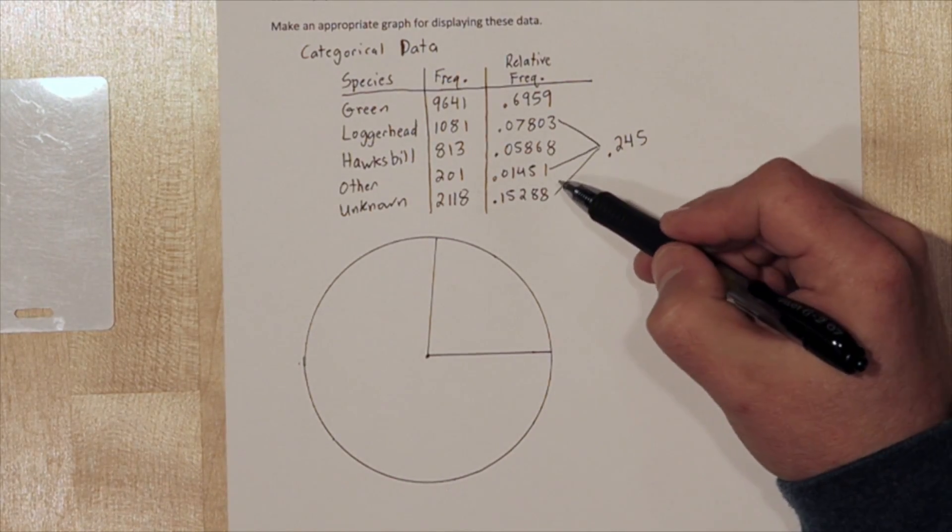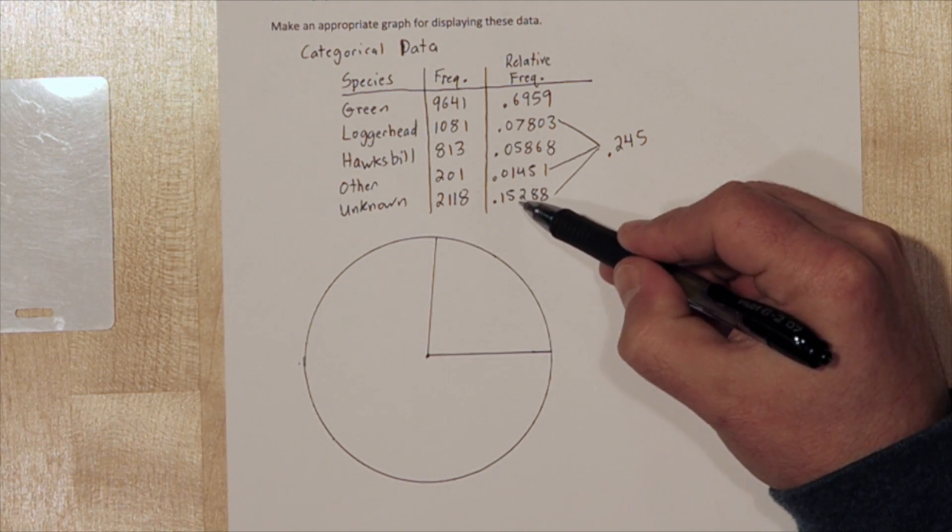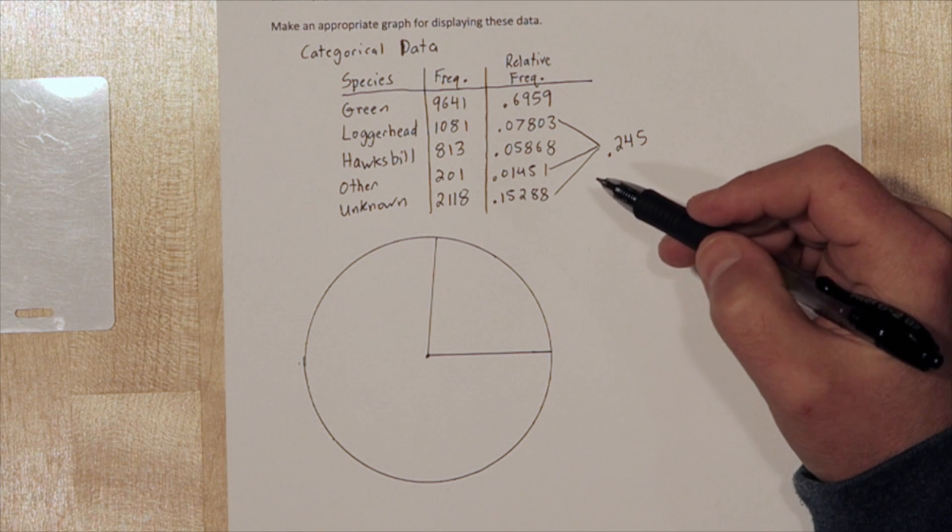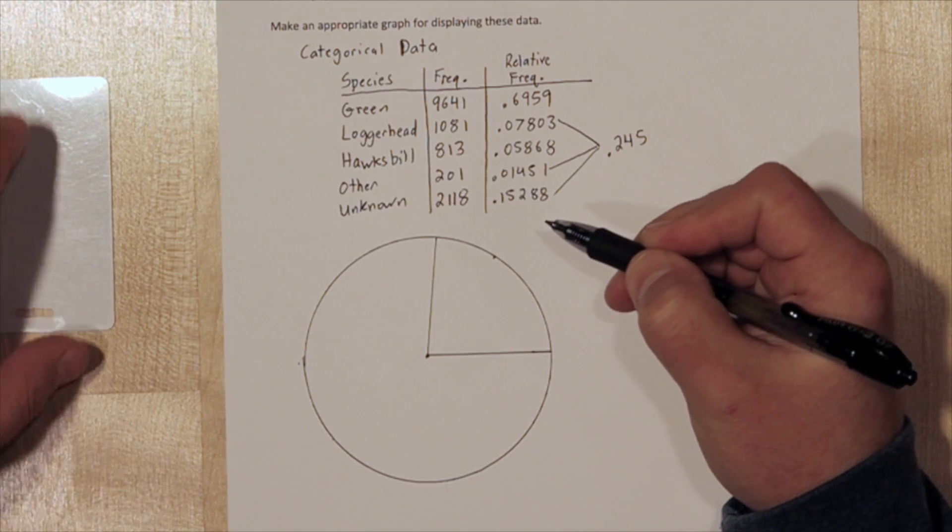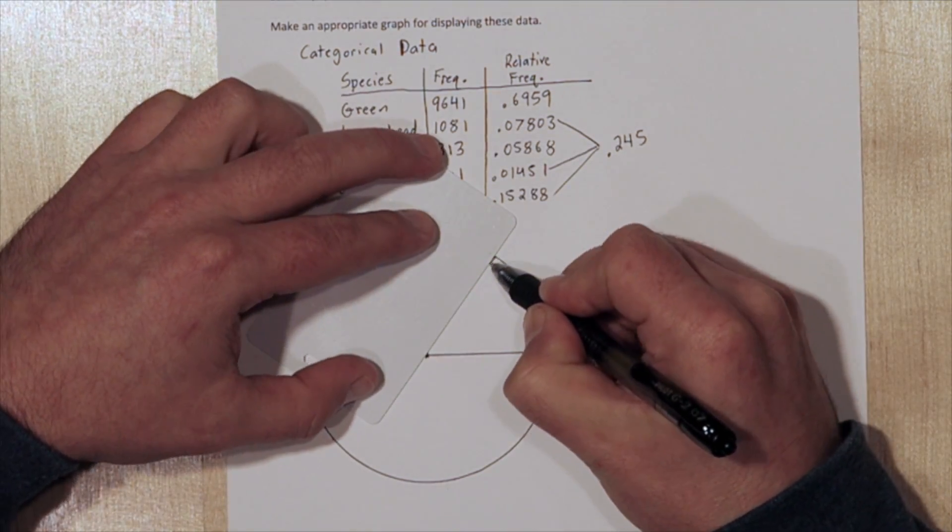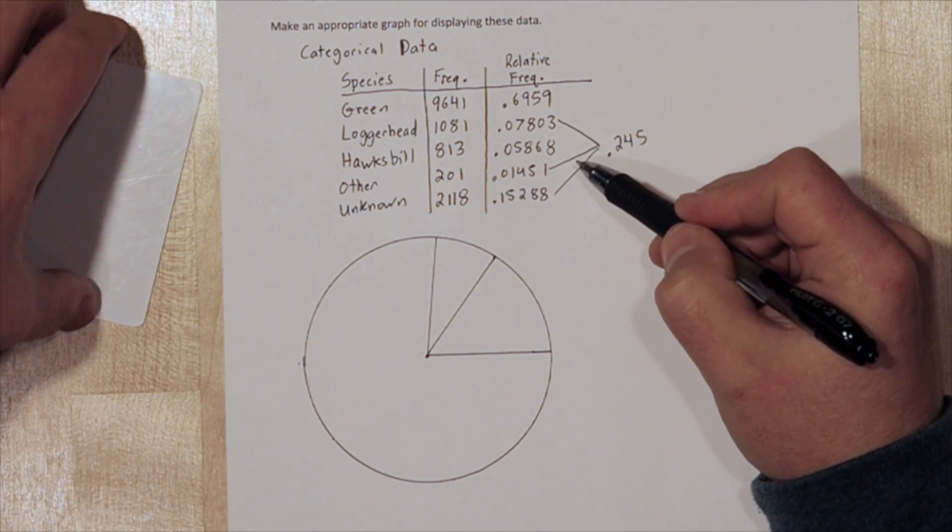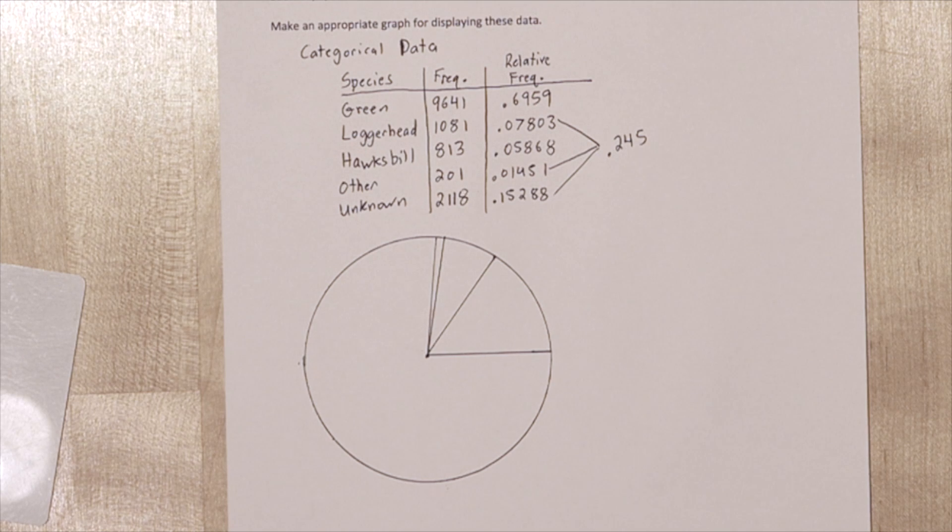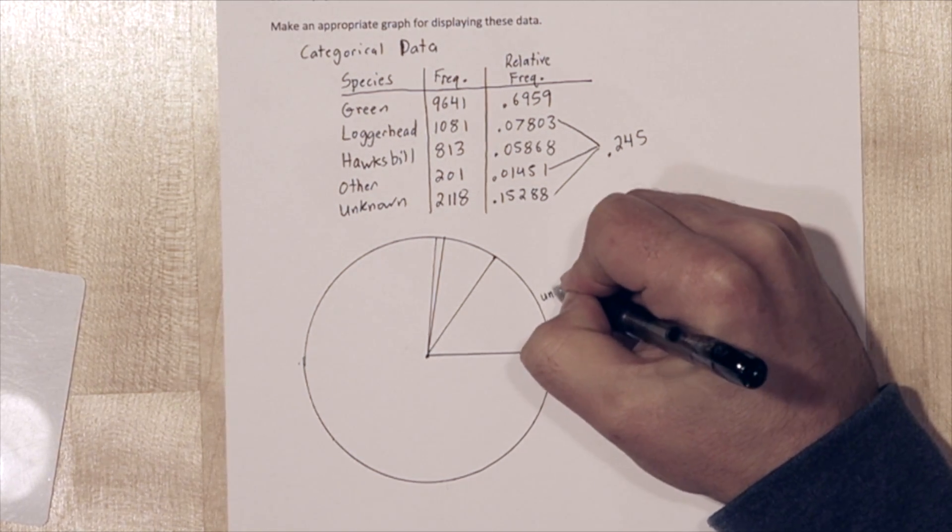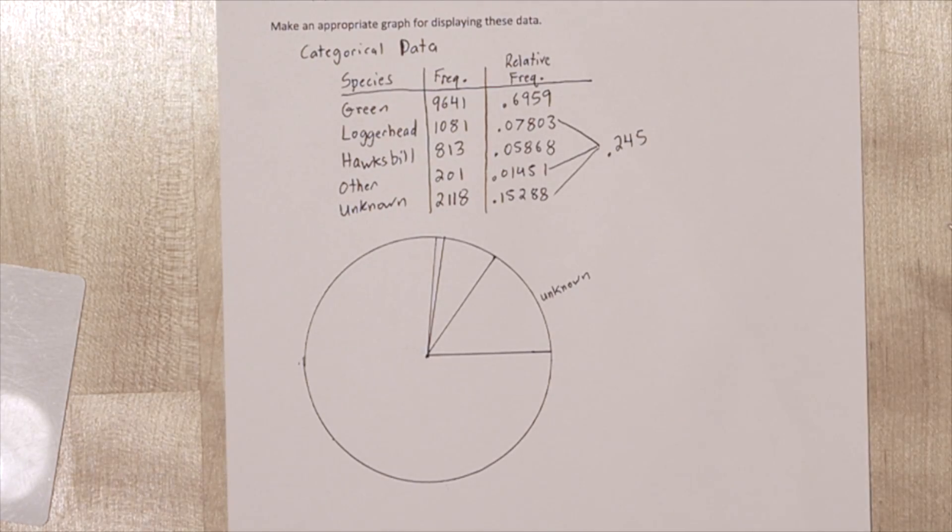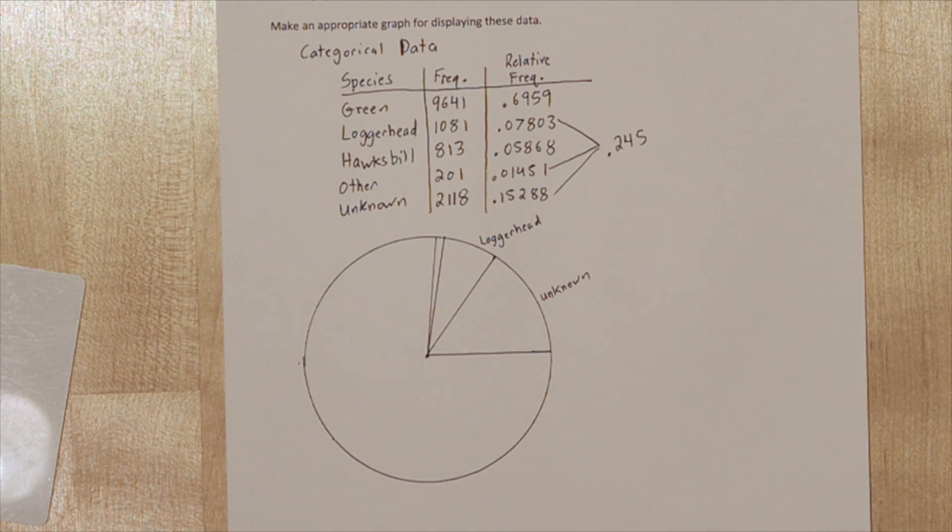So I have to squeeze loggerhead, other, and unknown into this section. So 15.3% of my section needs to be for unknown. That's probably about here. So let's connect those. Now we have an almost 8% and a 1.5%. Alright, so this section right here represents unknown. This section here is for loggerhead. And right here is for other.